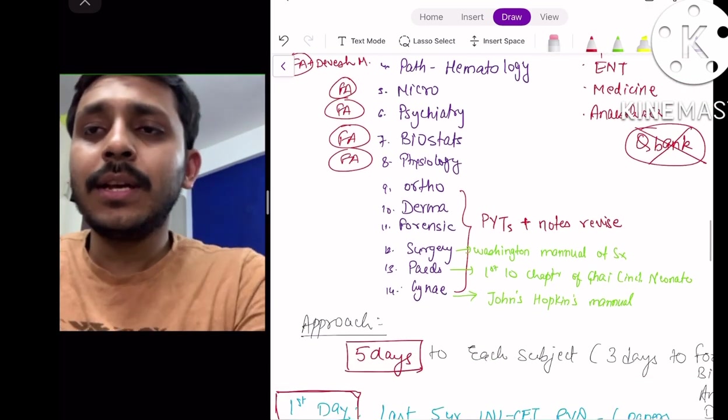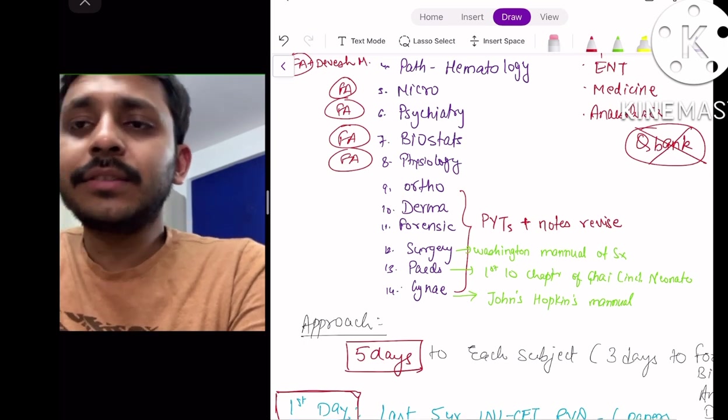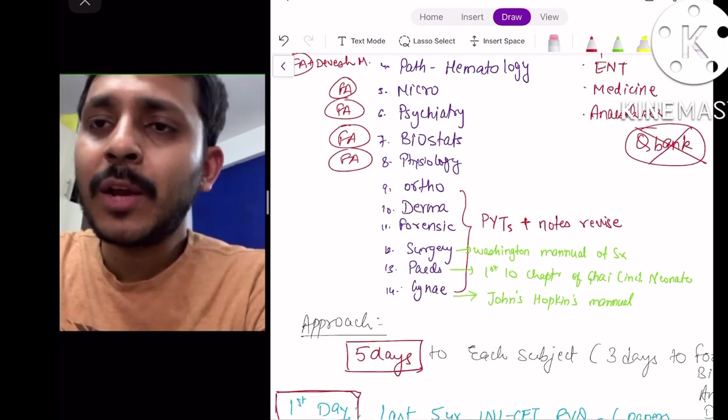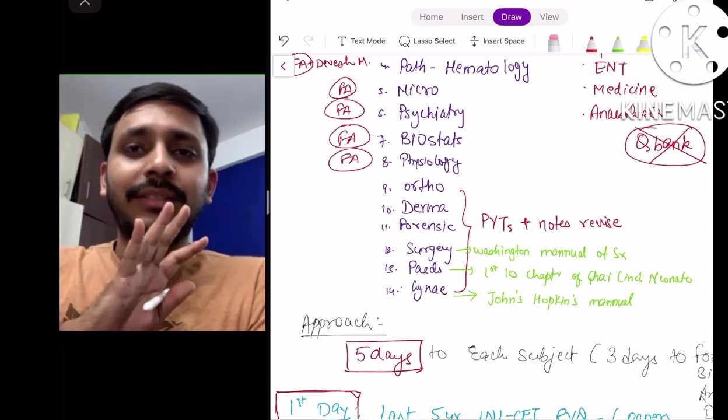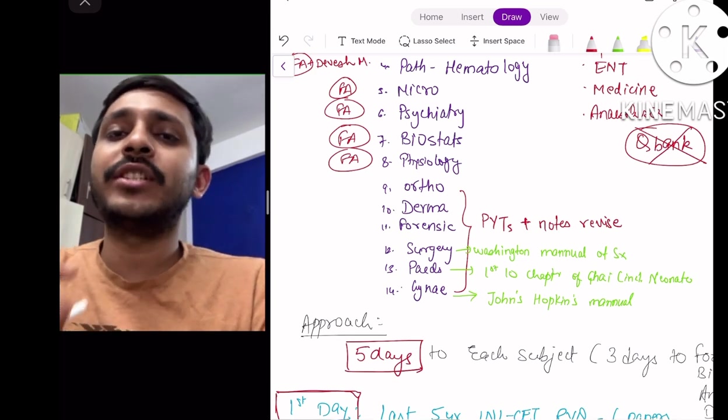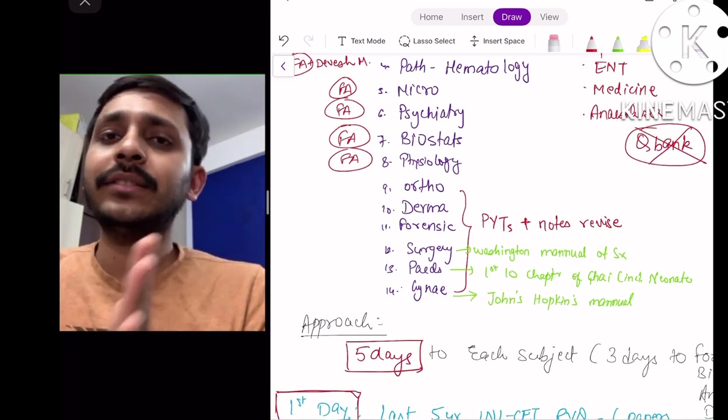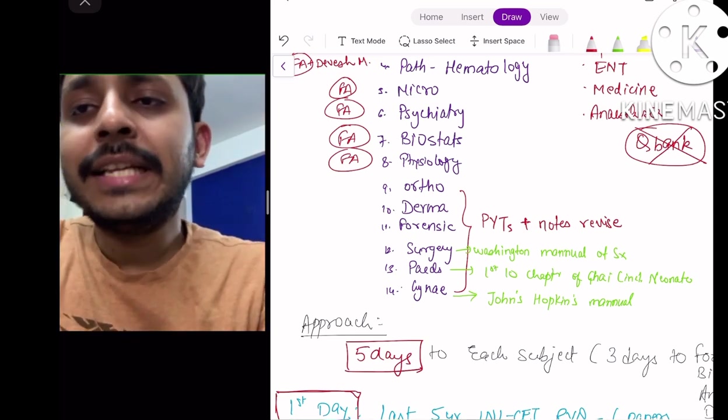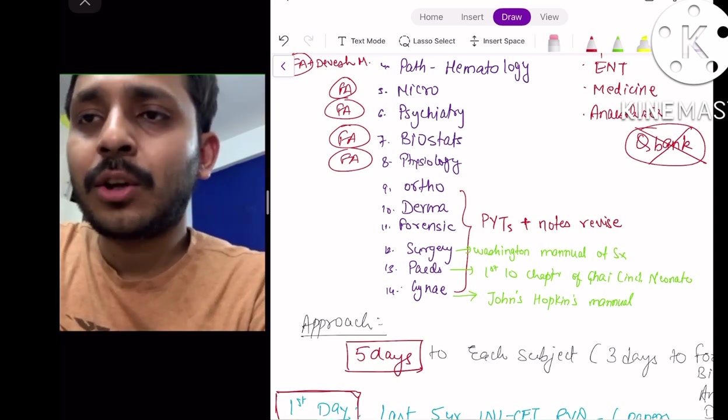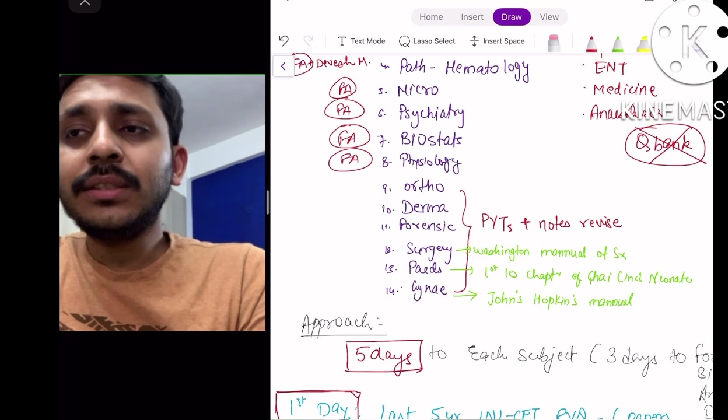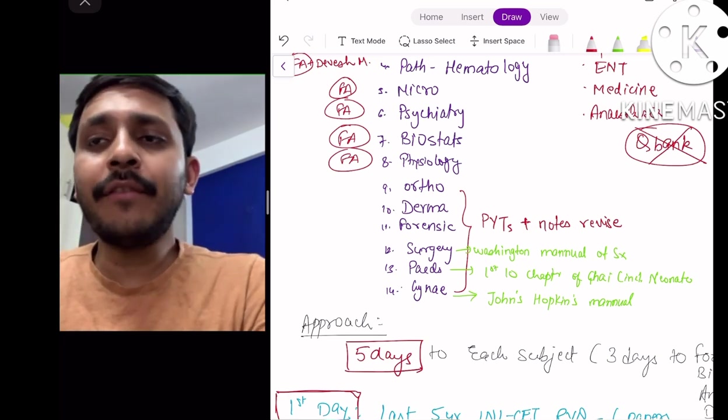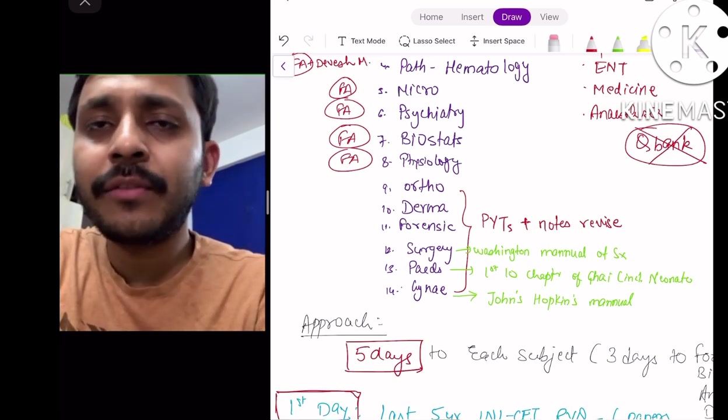For minors - ortho, derma, forensic, surgery also I consider minor because in my opinion, surgery only has 6-7 topics which you need to focus highly and they can be done in 5-6 days if you know from where to read. For these all subjects - minors and few major topics - just read previous questions and whatever notes you already have. Ortho, derma, forensic - there are less number of notes because they are shorter subjects.